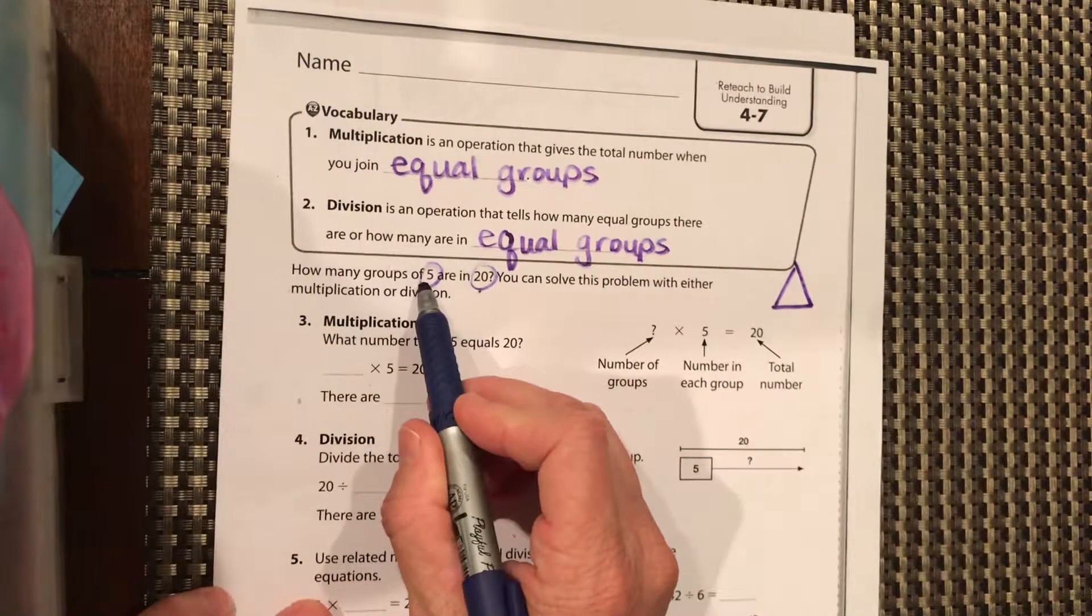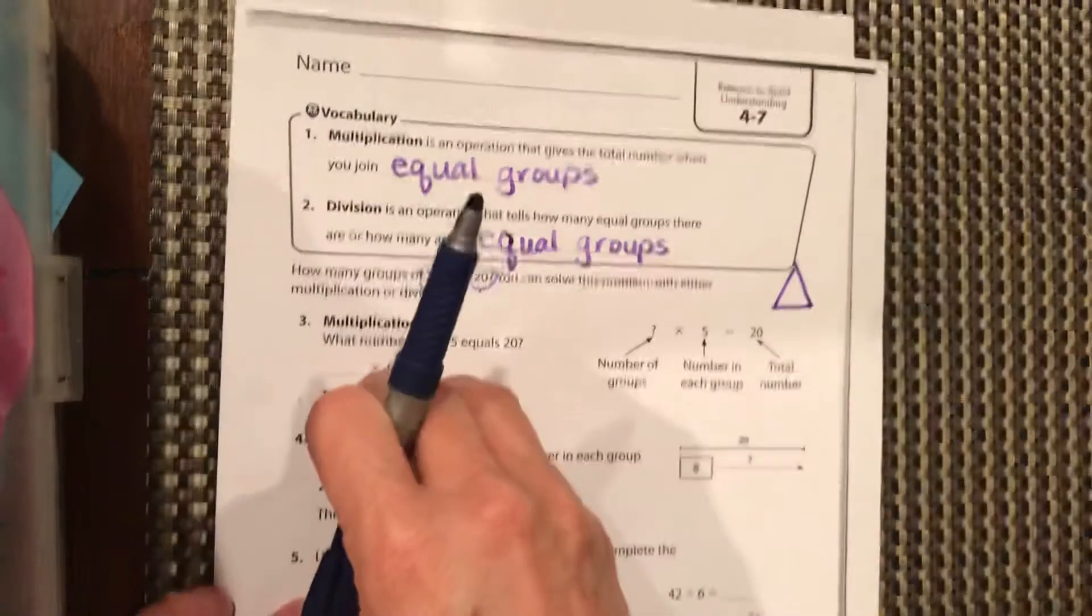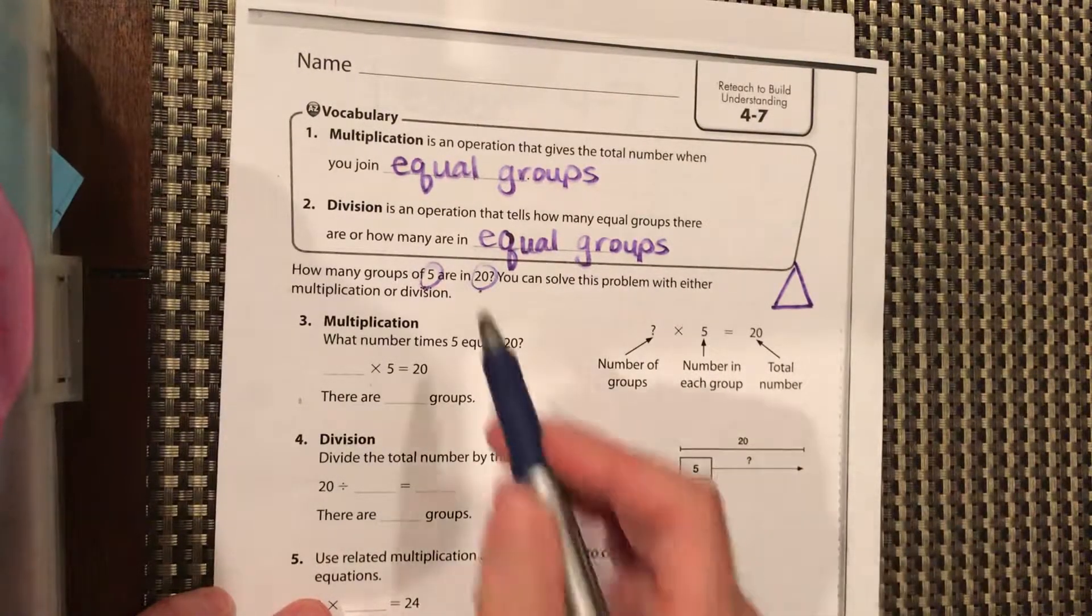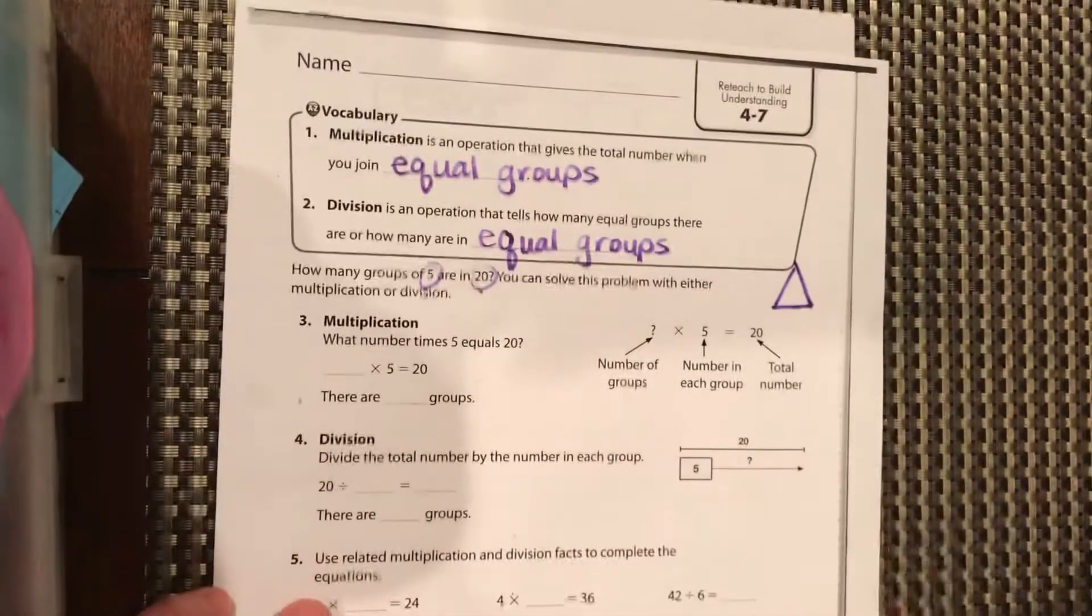You want to put them into groups of five. So you're going to do five, five, five, five, however many until you get to 20. So you know that you are not going to have more than 20 groups because we're going to be putting five into each one of those groups.